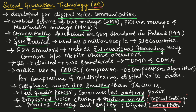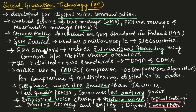The second generation technology was commercially launched on GSM standard in Finland in the year 1991. GSM services are used by 2 million people across 212 countries and territories. The GSM standard used in 2G technology makes international roaming very common between mobile phone operators.